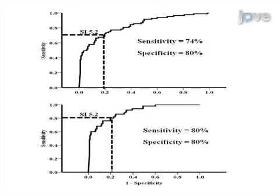The results reveal that a diagnostic cutoff value of 5.2 for the Split Hand Index reliably differentiates ALS from mimic neuromuscular disorders.